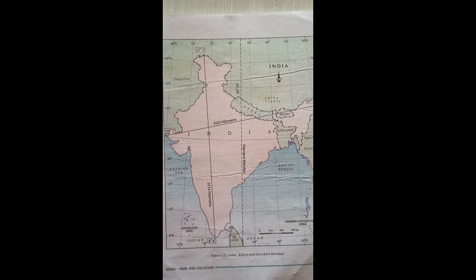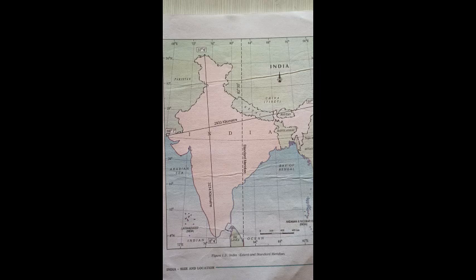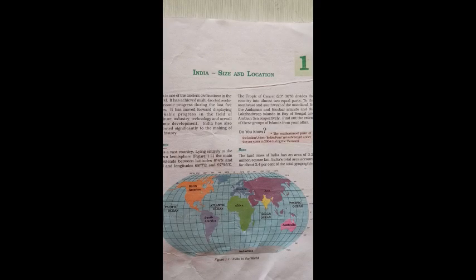Despite the fact that the latitudinal and longitudinal extent are both about 30 degrees, the east-west extent appears smaller than the north-south extent. From Gujarat to Arunachal Pradesh there is a time lag of two hours. The latitudinal extent influences the duration of day and night as one moves from south to north, and the longitudinal extent causes the difference in time between places in the same country.